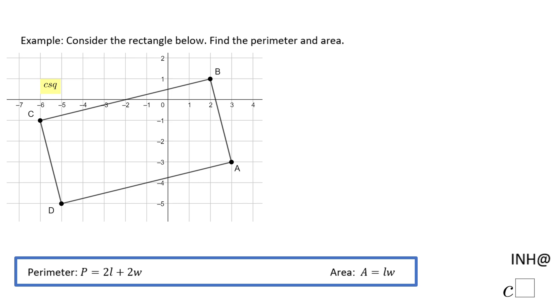Welcome or welcome back to I Need Help at C Square. In this example, we will see how to find the perimeter and area of this rectangle below. You'll notice we have two formulas.